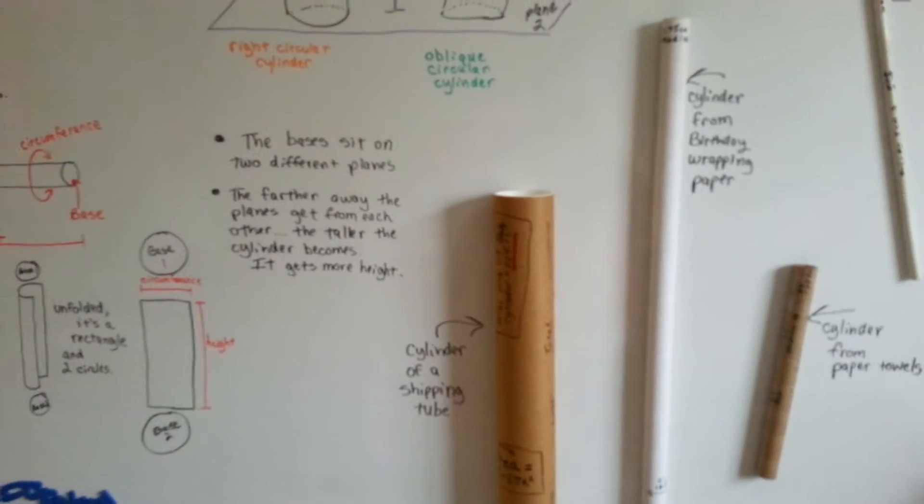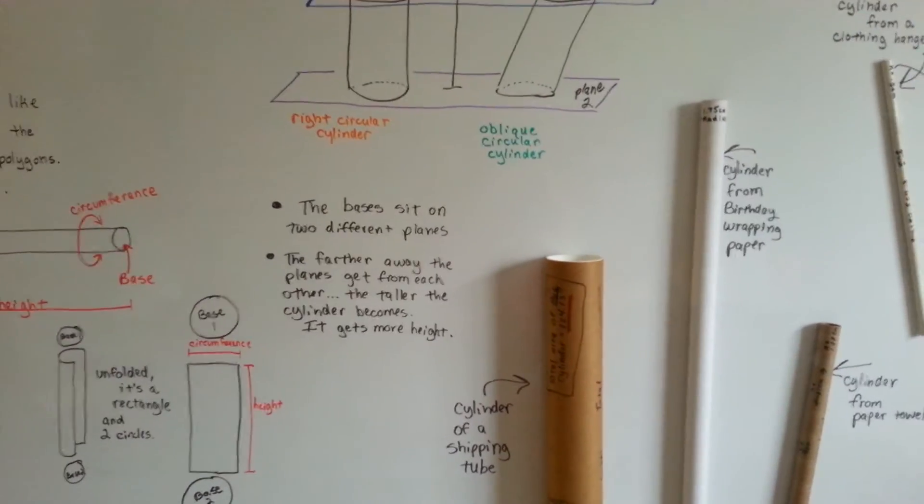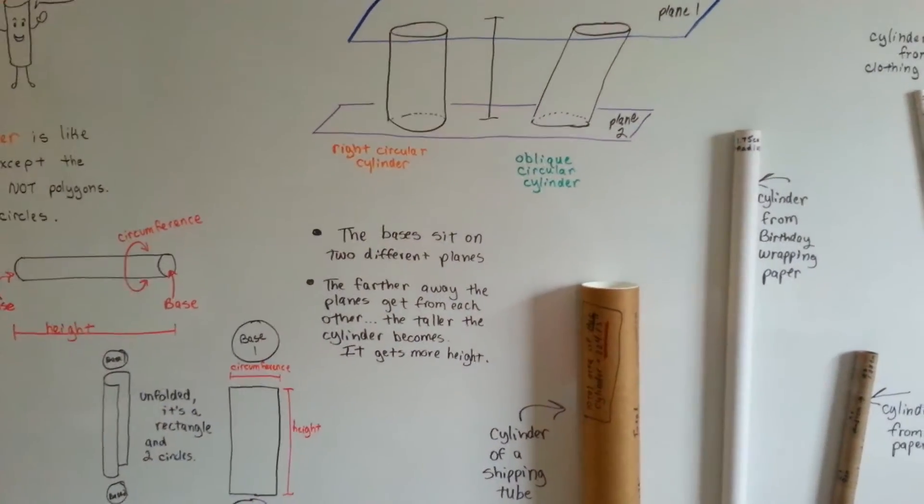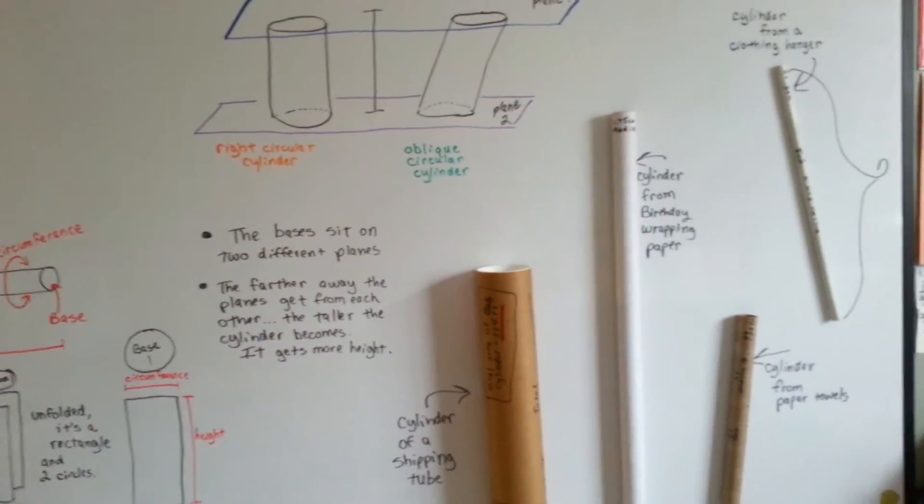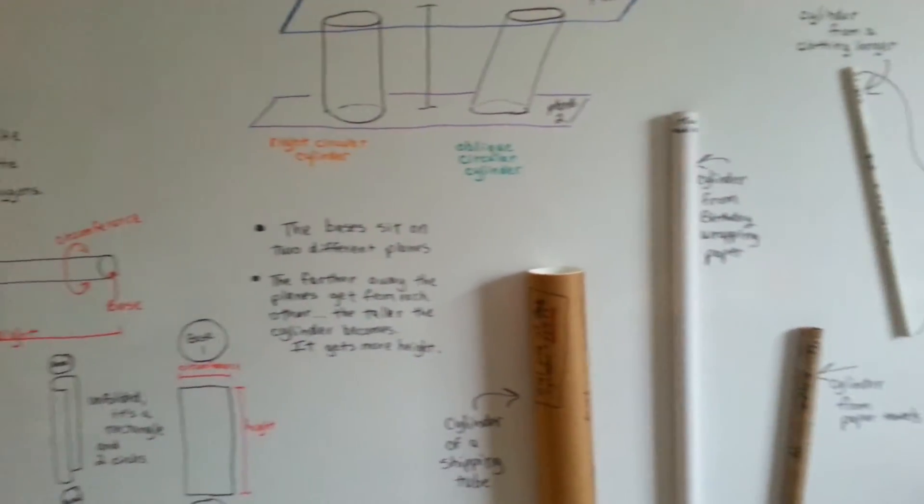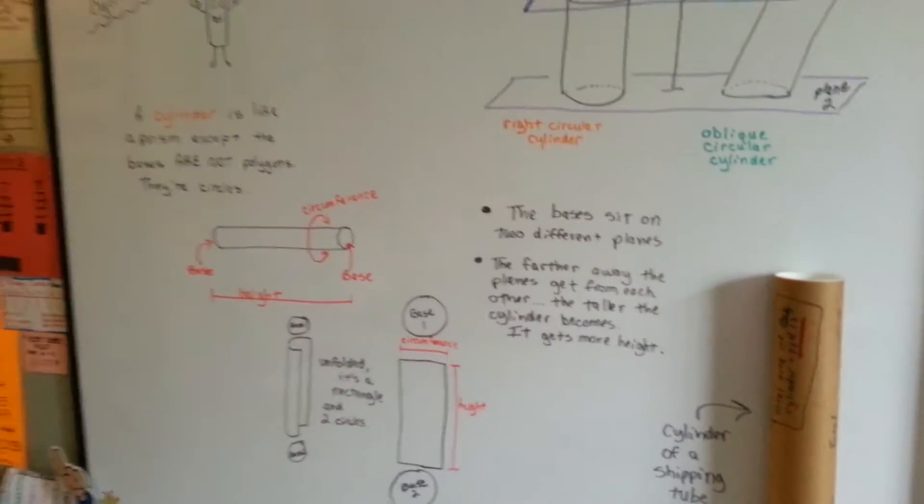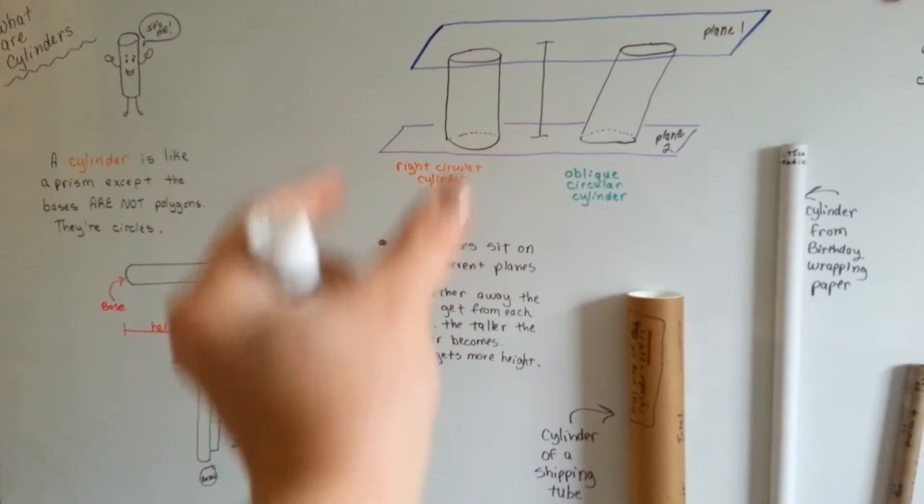You've got cylinders everywhere. A tube of glue could be a cylinder. The cardboard from your toilet paper roll could be a cylinder. There's lots of things. Nail polish bottle could be a cylinder if it goes straight up and down like that.